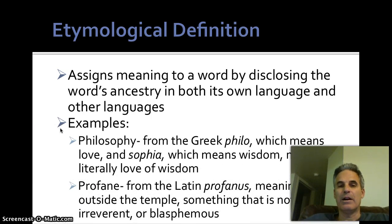So, philosophy from the Greek word philo, which means love, and sophia, which means wisdom. And so philosophy literally means love of wisdom. Now, I know my head's in the way, but profane is from the Latin profanus, which means outside the temple, something that is not sacred, something that is irreverent or blasphemous. So again, what we're doing is we're defining these words by looking at their roots in other languages, or sometimes even in our own. That's etymological.